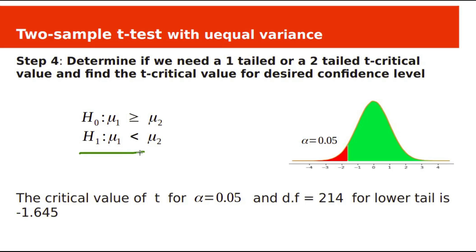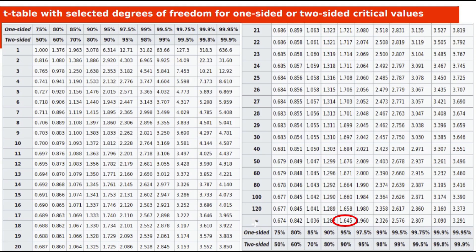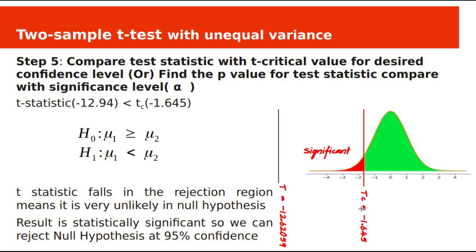This is a left-tail test. The t-critical value for degrees of freedom 214 — using the row for 120 since the table goes up to 120 — for a one-tail test at 95% confidence level is 1.645, so the t-critical value is −1.645. Since the t-statistic −12.94 falls within the rejection region, the result is statistically significant in support of the alternate hypothesis at 95% confidence level, so we reject the null hypothesis.